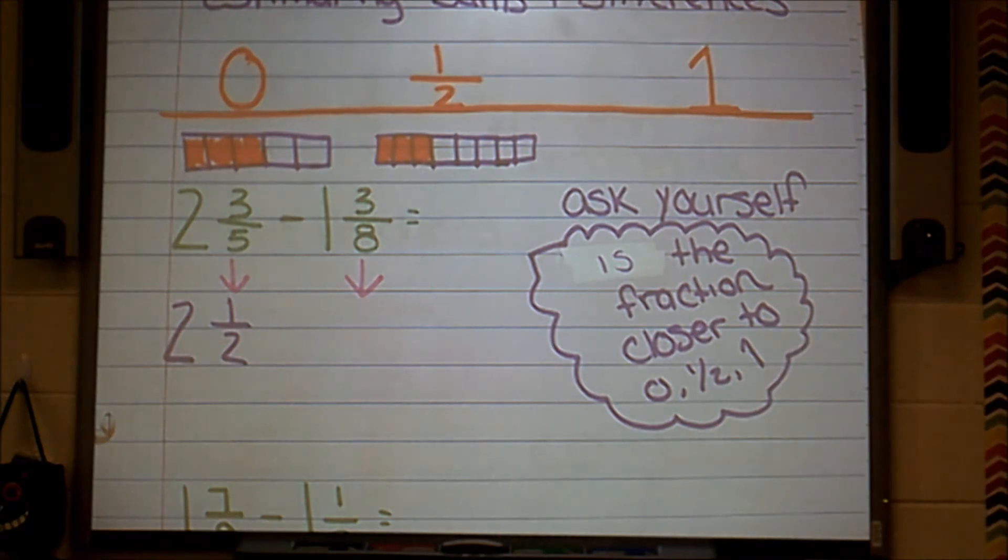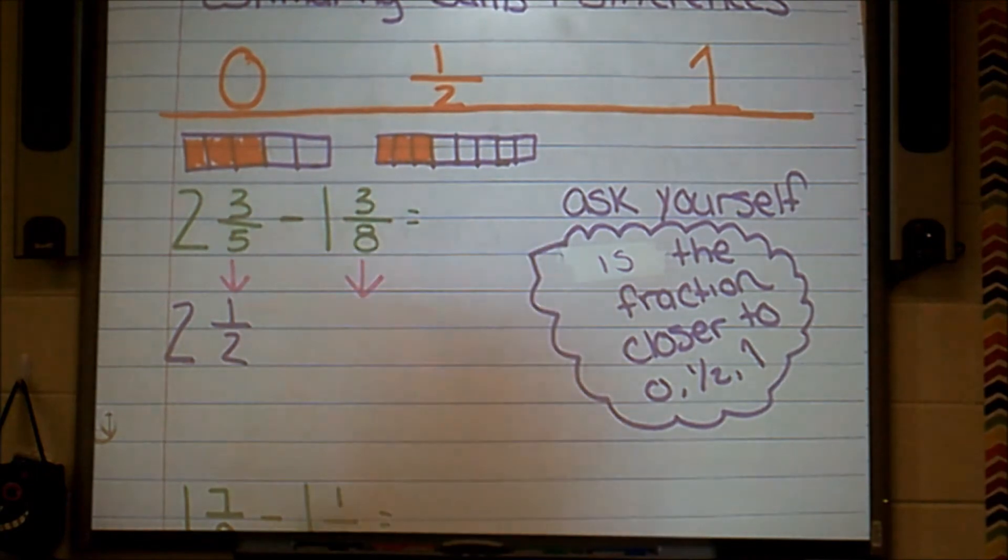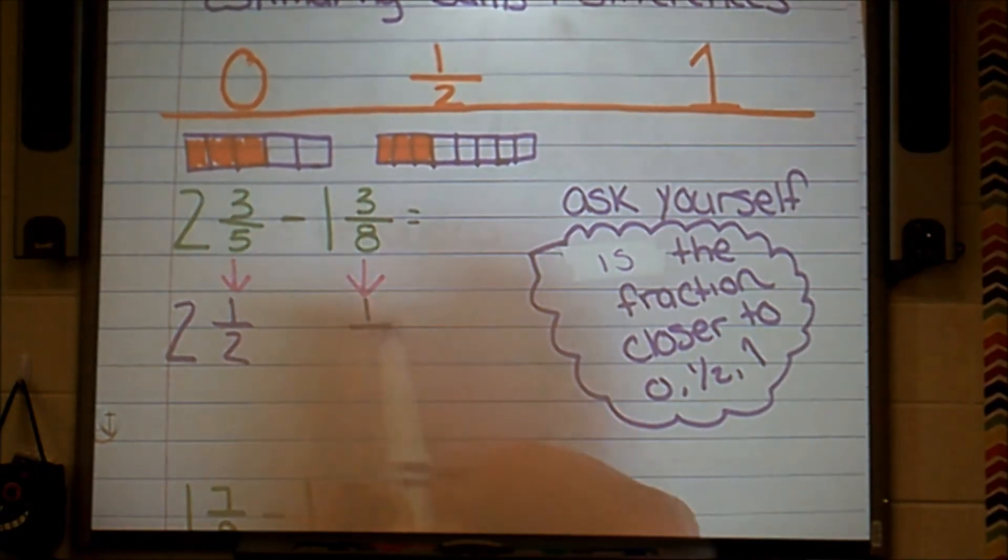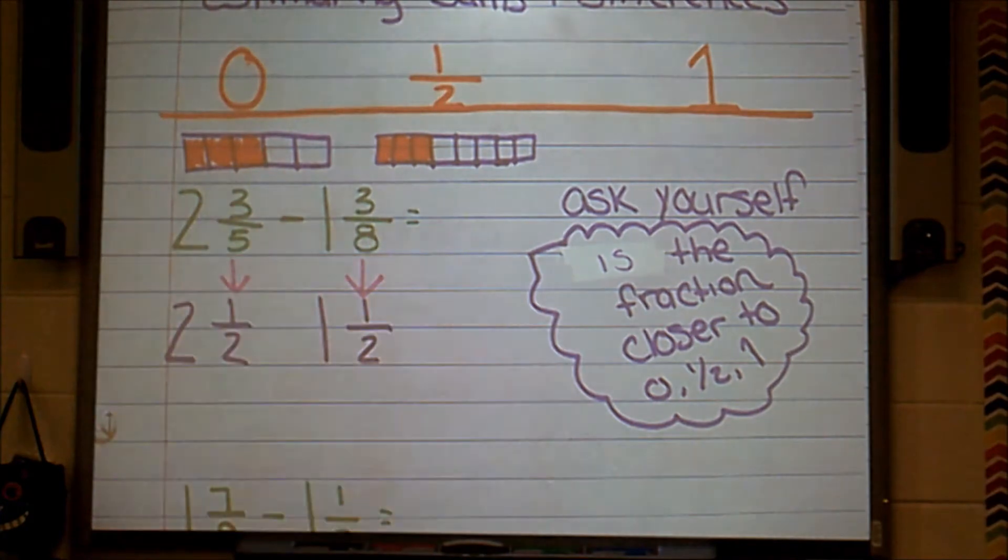So what do you think? I agree. About half of that is colored in. 4 eighths exactly would be half. And this is only one piece less than that. So I think that I agree with you. And then I'm going to round my 3 eighths to about 1 half, leaving my whole number the same.